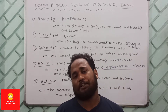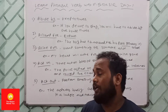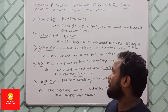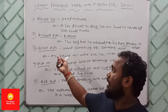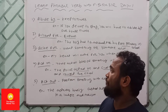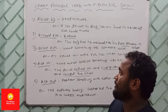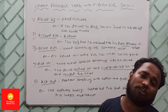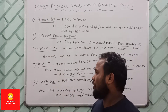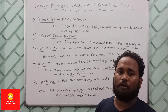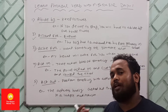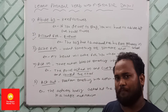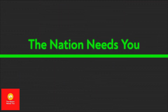So in the first series of phrasal verbs we learned: abide by — to follow rules; account for — to explain; act for — to want something or someone a lot; act on — to take action on information; and act out — to perform with actions and gestures.